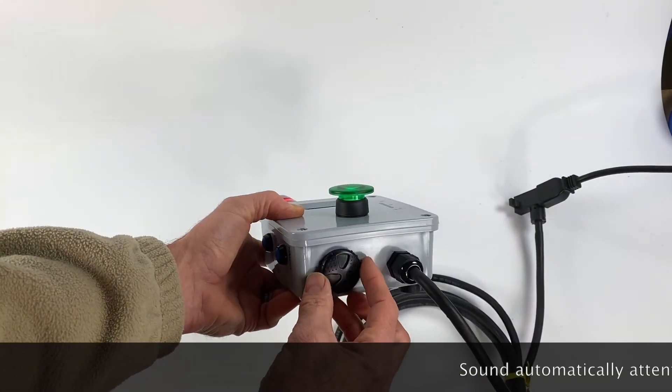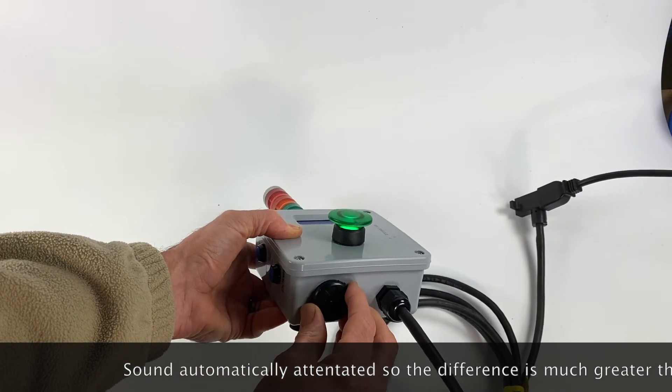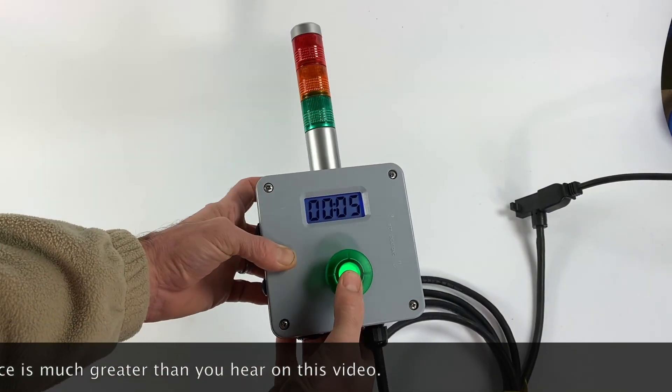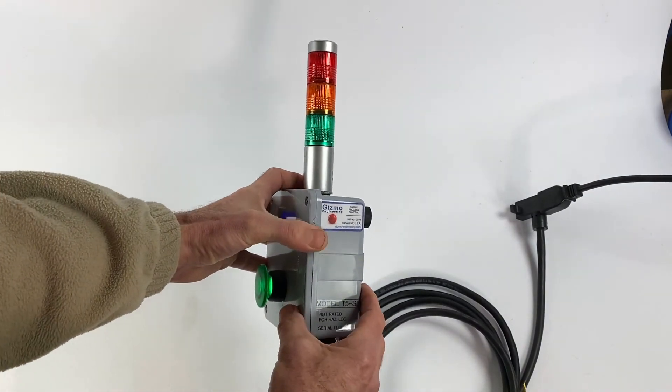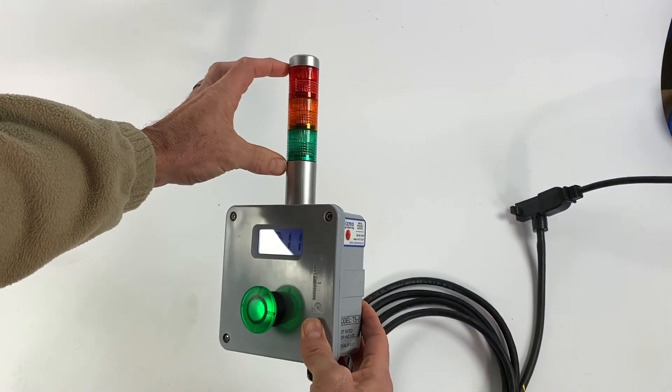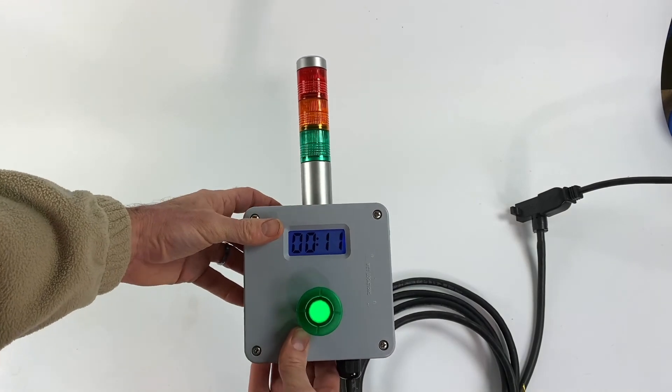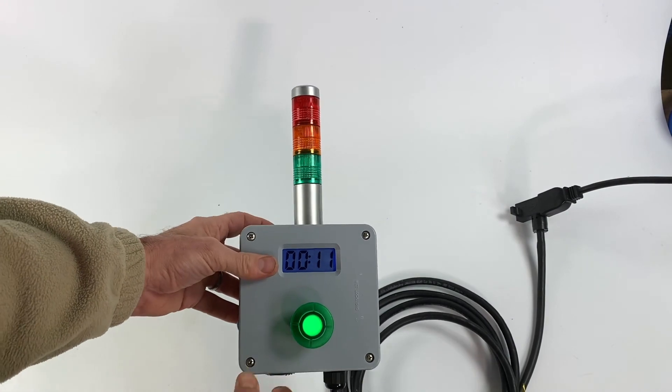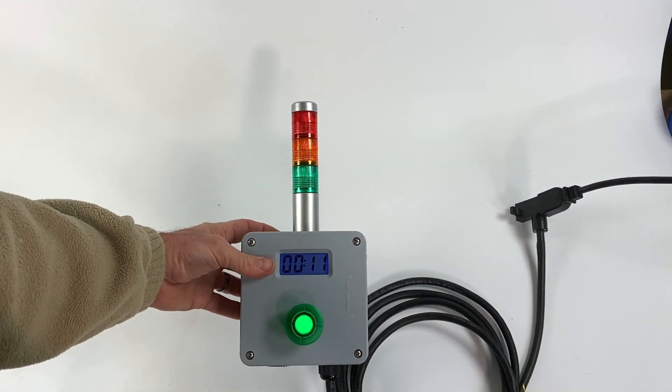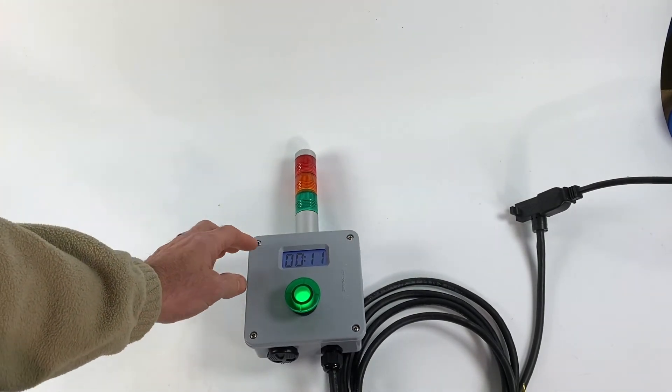So that's the T5-S3 for three stack light colors. We have the S2 which gives you either - usually red and green is standard - or some people want red and yellow. That's an option you can select. Thanks for watching.